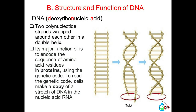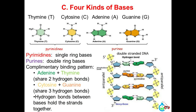B. Structure and function of DNA. DNA (deoxyribonucleic acid) consists of two polynucleotide strands wrapped around each other in a double helix. Its major function is to encode the sequence of amino acid residues in proteins using the genetic code. To read the genetic code, cells make a copy of a stretch of DNA in the nucleic acid RNA.